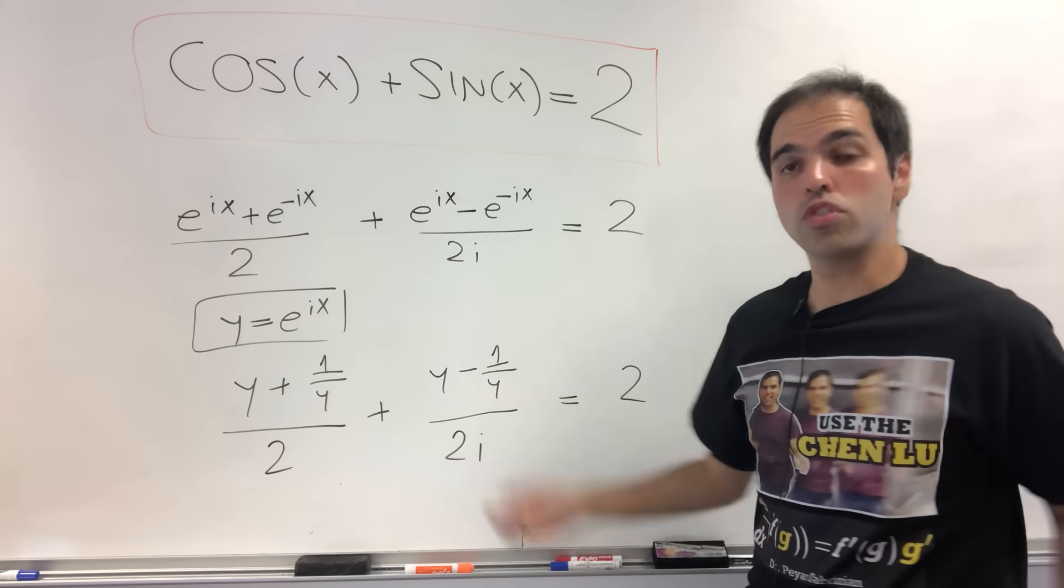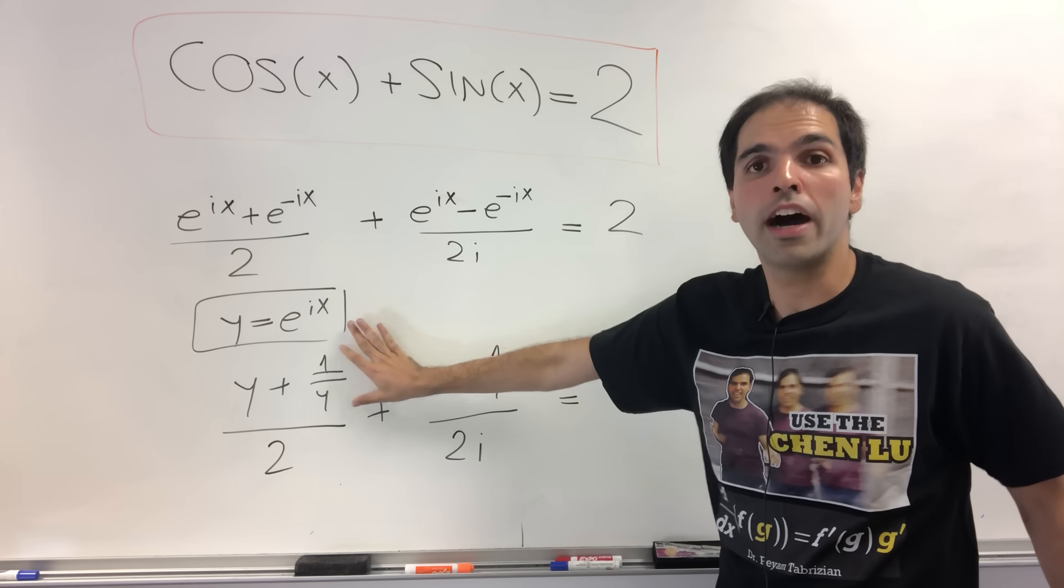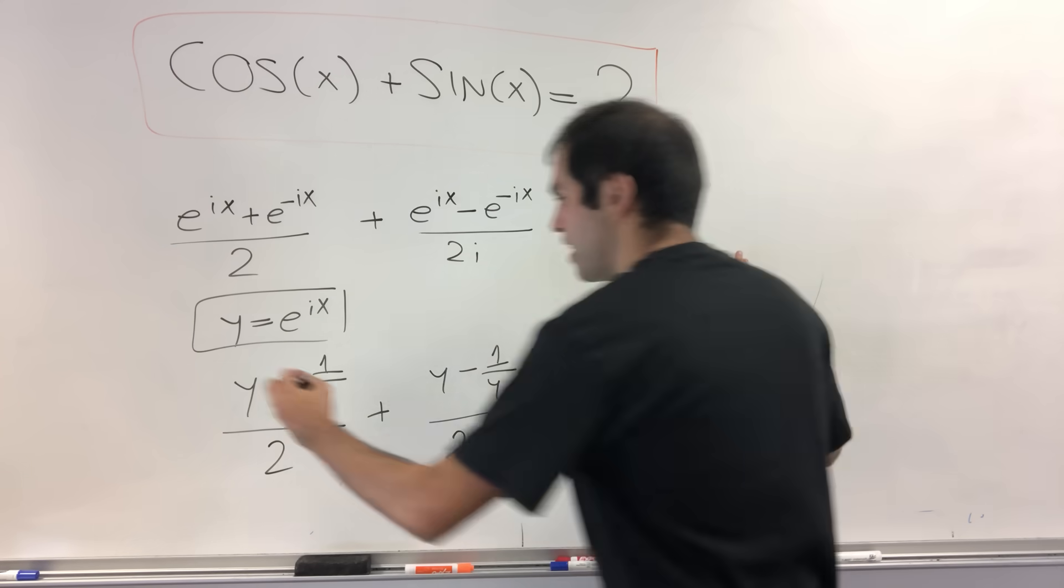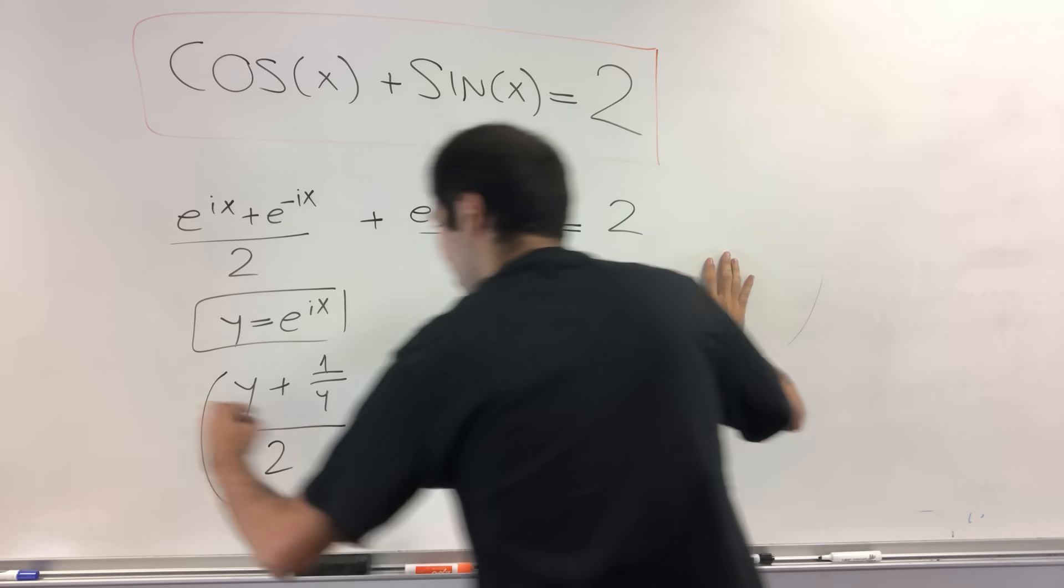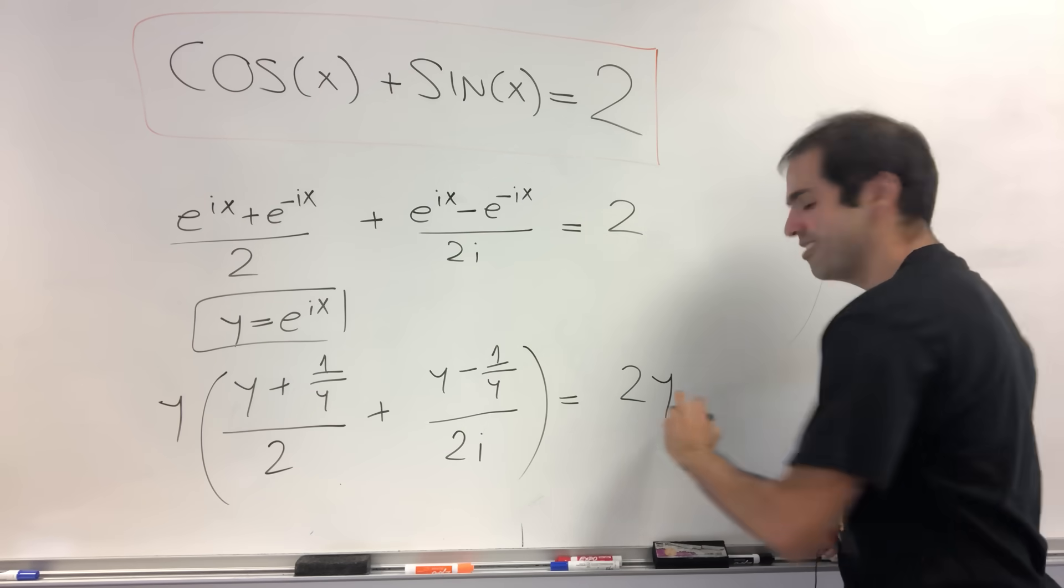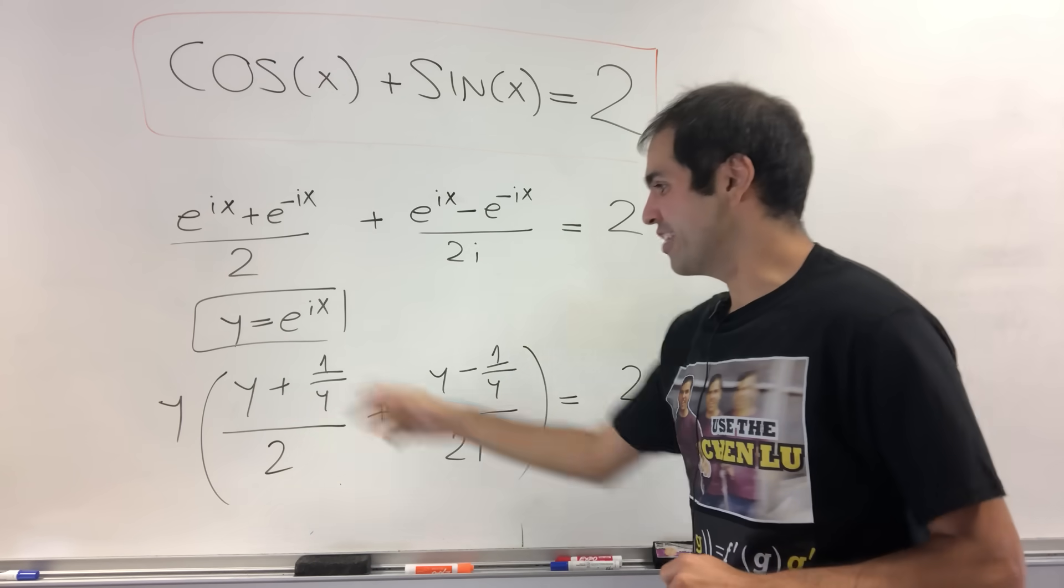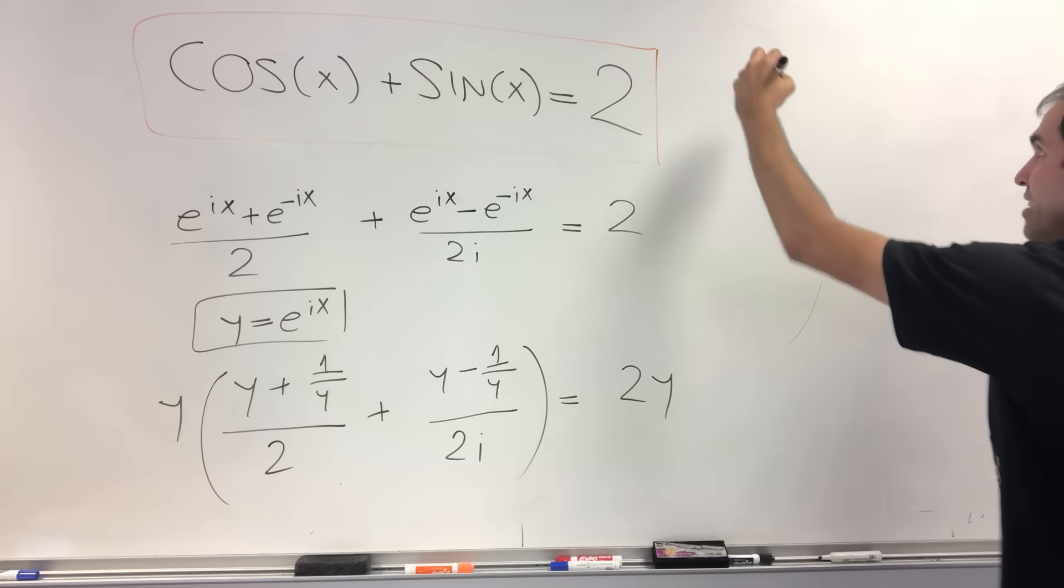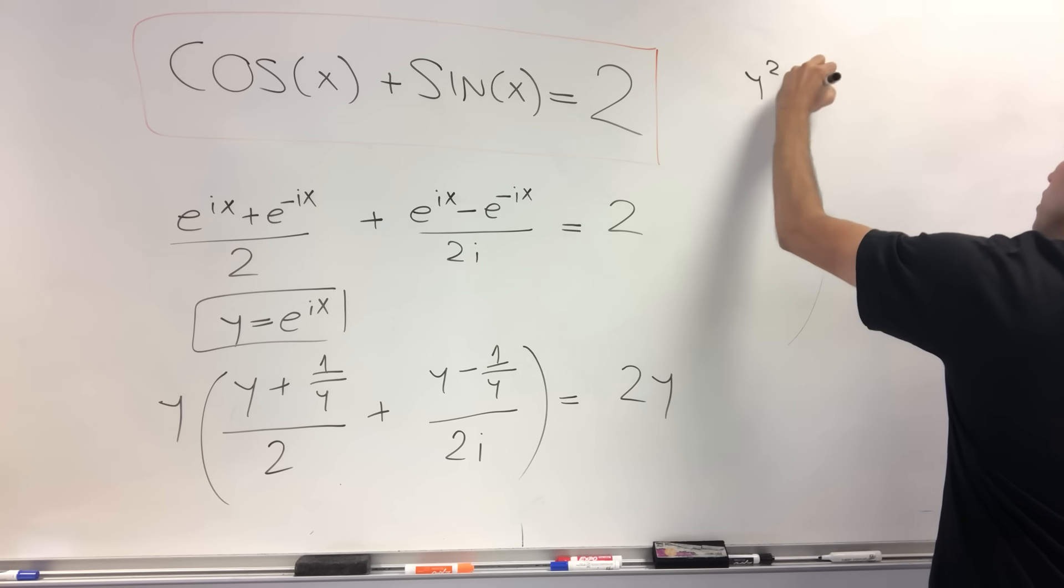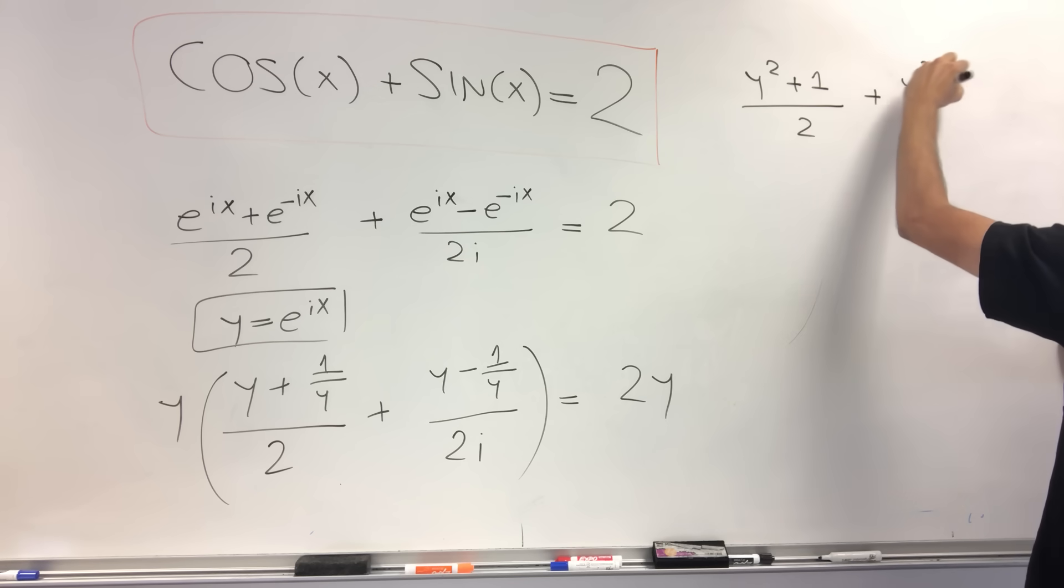And well, let's just do some cosmetic fix. So let's try to get rid of 1 over y by multiplying both sides by y. But y ≠ 0, because I say so, and you'll see it does simplify our equation. Then what we get is y² + 1 over 2 plus y² - 1 over 2i equals 2y.